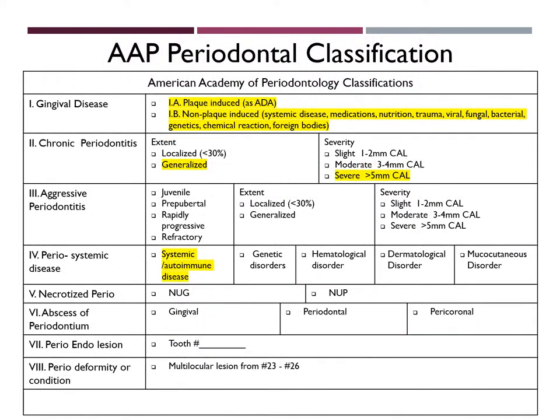For AAP periodontal classification, I chose 1a plaque-induced and 1b non-plaque-induced gingival disease. I chose these two because plaque-induced would relate to his spinal cord injury in which he has limited ability to remove any plaque from his teeth, and non-plaque-induced based on his epileptic condition. The extent of periodontitis is generalized, which is also chronic, and it's severe, which is well over 5 mm of clinical attachment loss. There is also a systemic and autoimmune parasystemic disease which is caused by the epilepsy.